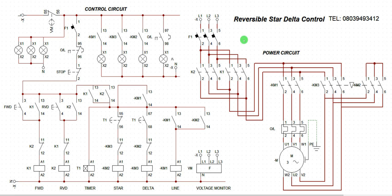Let me walk you through the operation sequence of this particular design. This is a reversible star delta control. Let me walk you through the operational sequence, but before then, let's identify different logic that is responsible for a particular function.